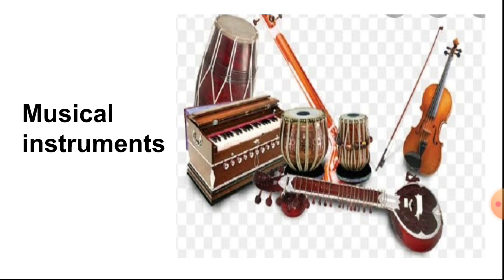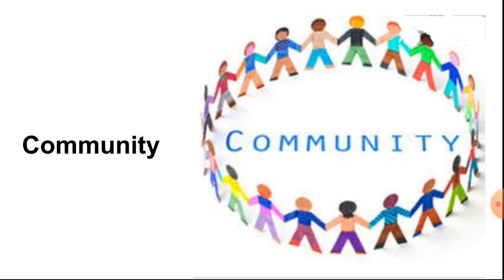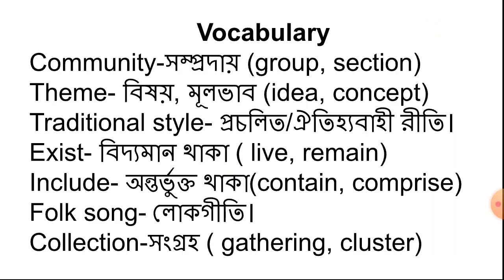Then: musical instruments, or 'baddo jantra.' Here is a nice picture of musical instruments. Then comes: collection — collection means a group of things or persons, it means gathering. Here we see the gathering of some colorful butterflies. Then: community — 'shampraday' — it means people living in a particular place or country.